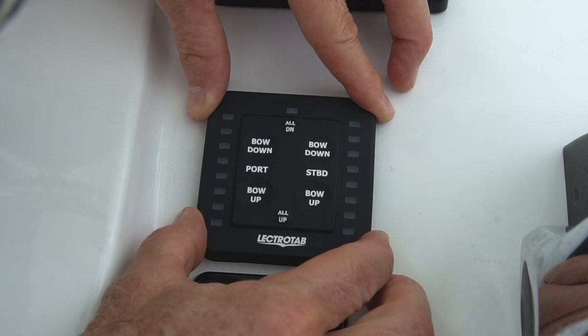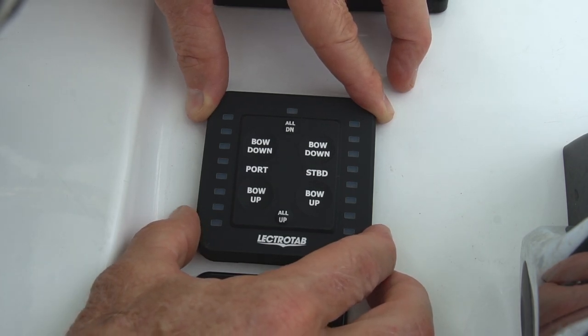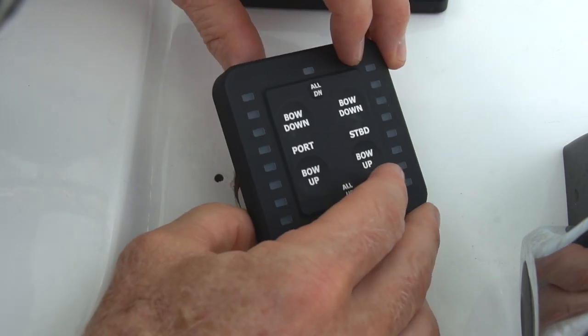First, you'll need to gain access to the backside of the SLC control and remove the two thumb nuts holding it to the dash.